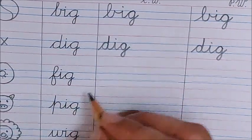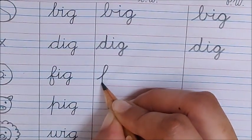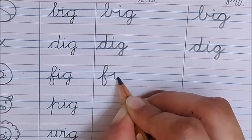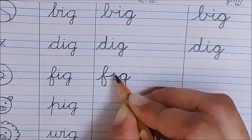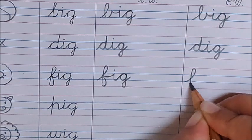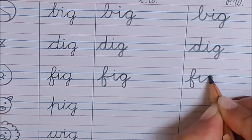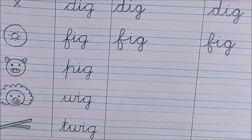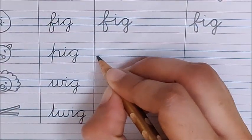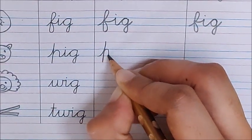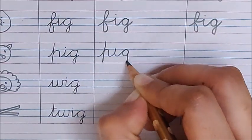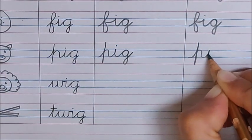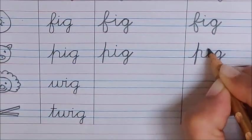Next word is fig. Say and write. F, take the smiley up, go down. I, G. Fig. F, I, G. Fig. P, I, G. Pig. P, I, G. Pig.